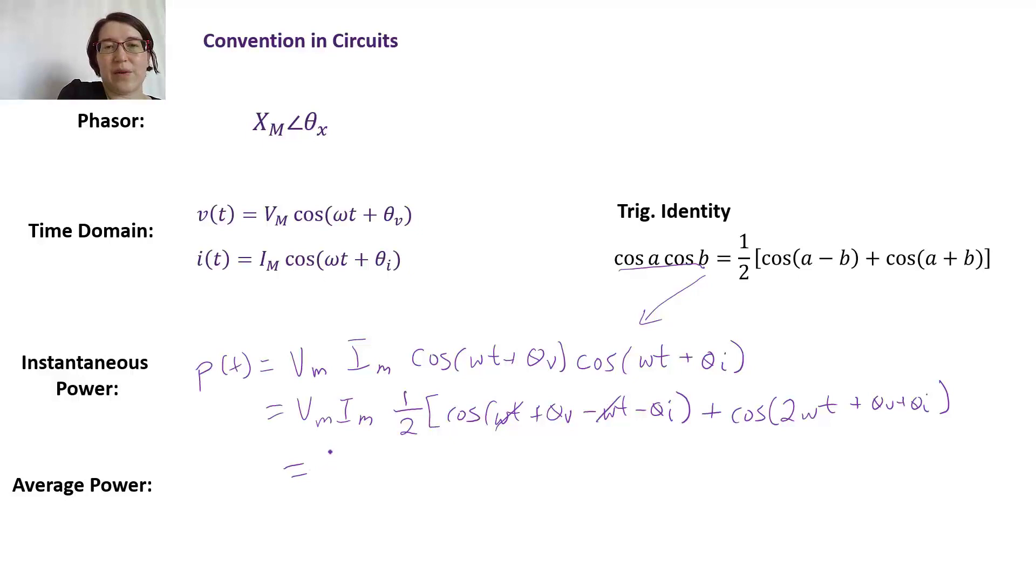So we'll be left with VM IM over two in the front, and then we have cosine of theta V minus theta I and plus cosine of two omega t plus theta V plus theta I. Okay, so that's our instantaneous power equation.